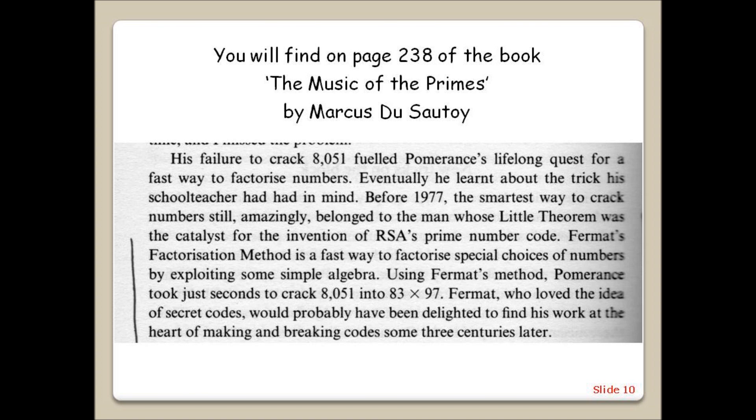Fermat's factorisation method is a fast way to factorise special choices of numbers by exploiting some simple algebra. Using Fermat's method, Pomerance took just seconds to crack 8051 into 83 times 97. Fermat, who loved the idea of secret codes, would probably have been delighted to find his work at the heart of making and breaking codes some three centuries later.